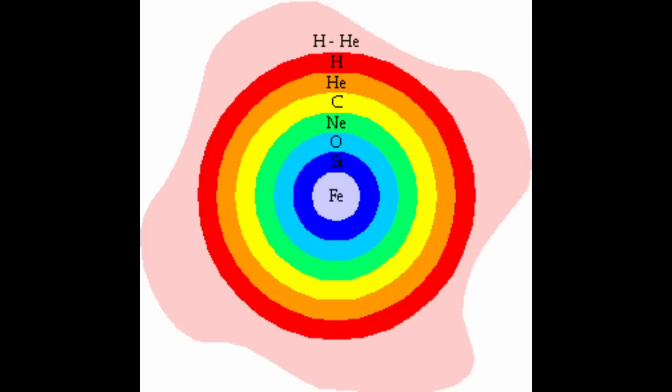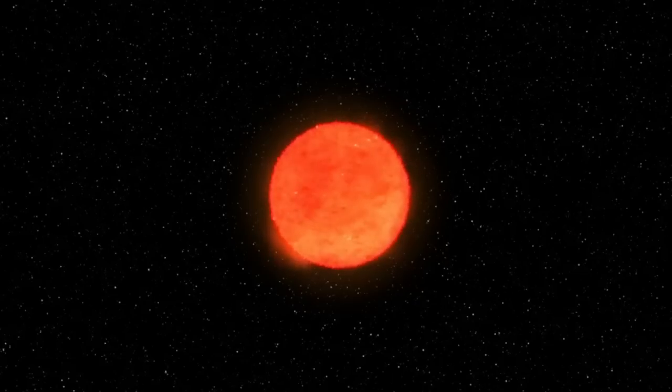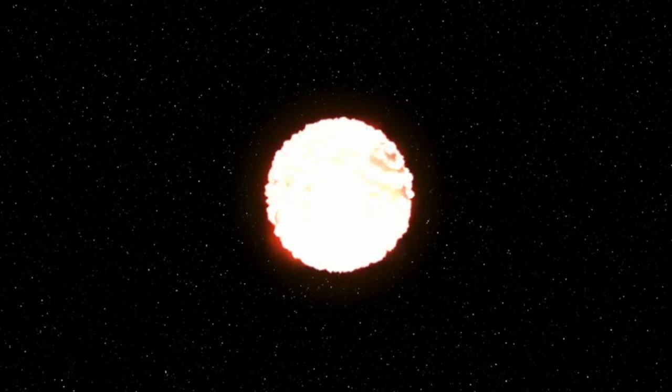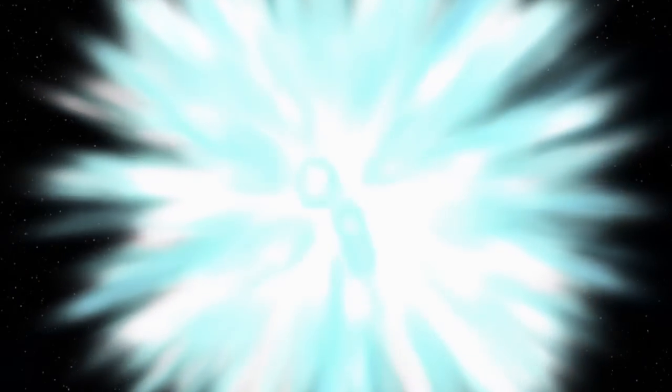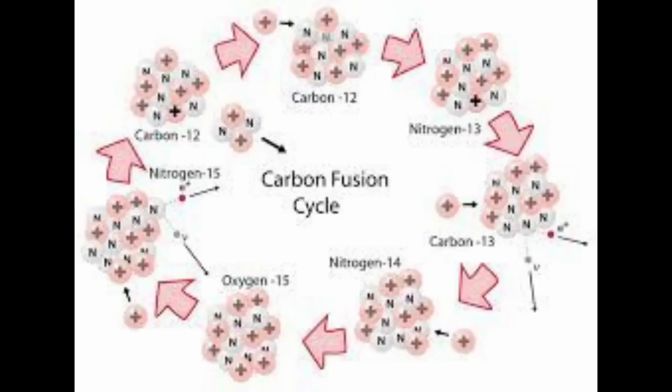Unlike other elements, iron consumes energy when fused, rather than producing it. And so, once a star reaches the point at which iron is its only available fuel, it loses the energy needed to keep itself from collapsing into its core, and explodes into a supernova. If the team is right that Betelgeuse is nearing the end of its thousand-year carbon-burning phase, the possibility that its lifetime might end within our own becomes very real.